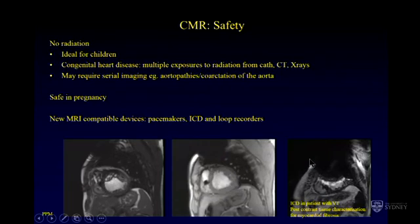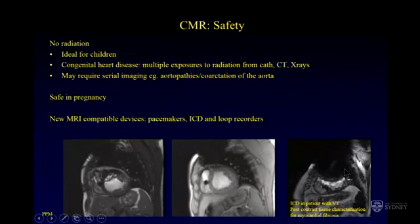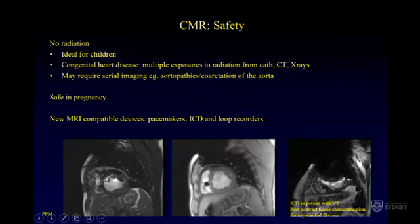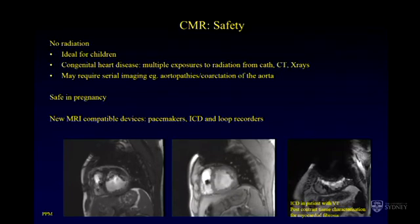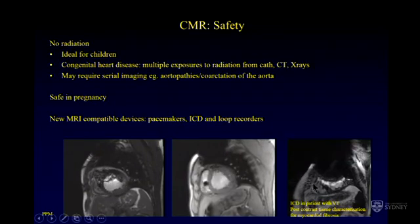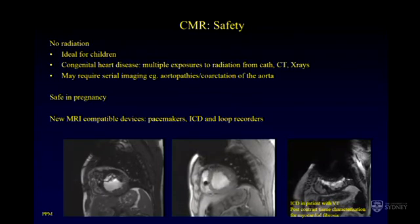But occasionally, no matter what we do, we cannot get rid of the metallic artifact and we end up with a degraded picture. This is when it might be important because the question that the patient was sent for may not be answered adequately. In this particular case, this is a patient who had VT and subsequently had an ICD put in. The reason for MRI at this stage is to try to work out why this patient may have VT, in particular to look for myocardial fibrosis, which is a risk factor for arrhythmia and ventricular tachycardia.